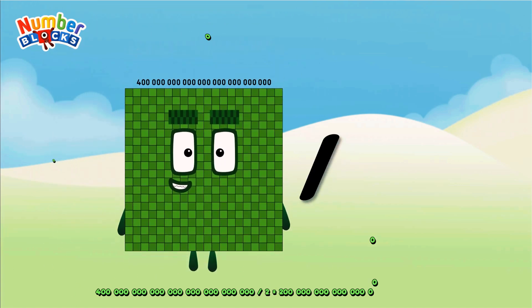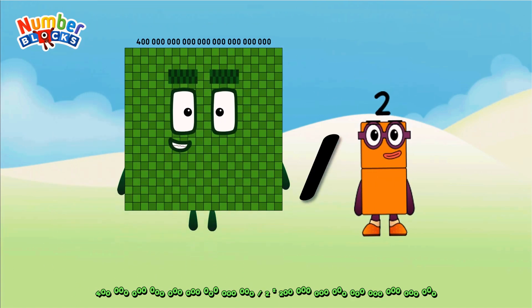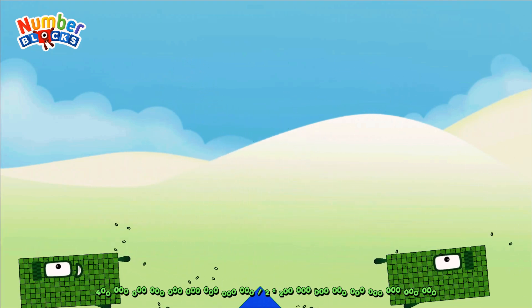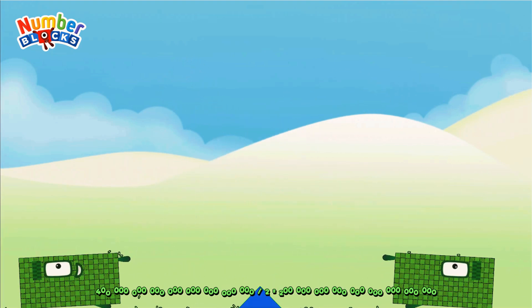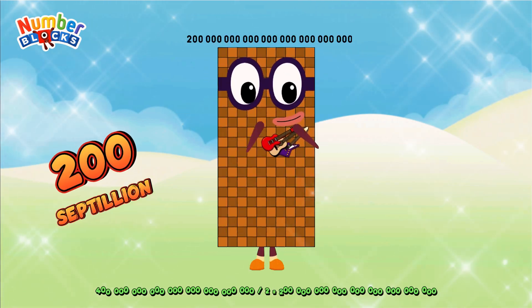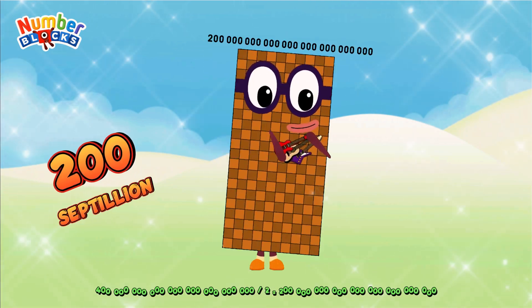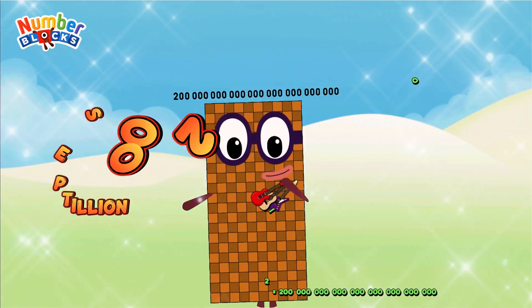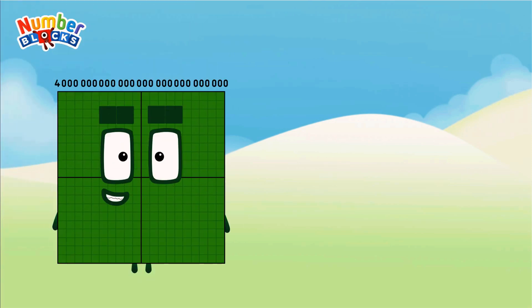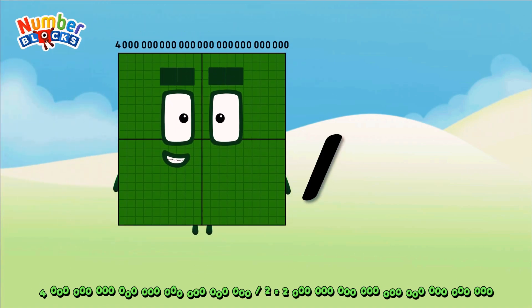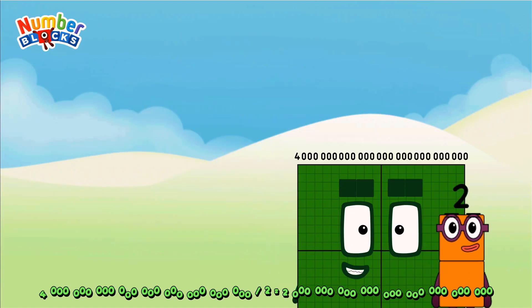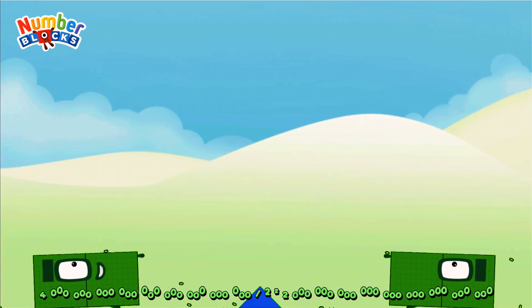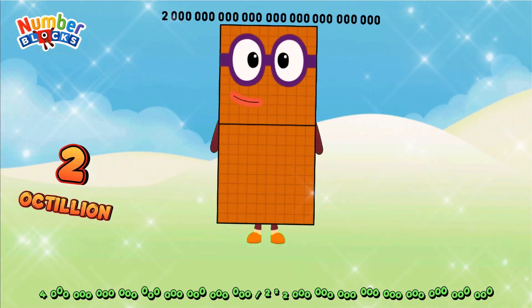Four hundred subtillion divided by two equals two hundred subtillion. Four octillion divided by two equals two octillion.